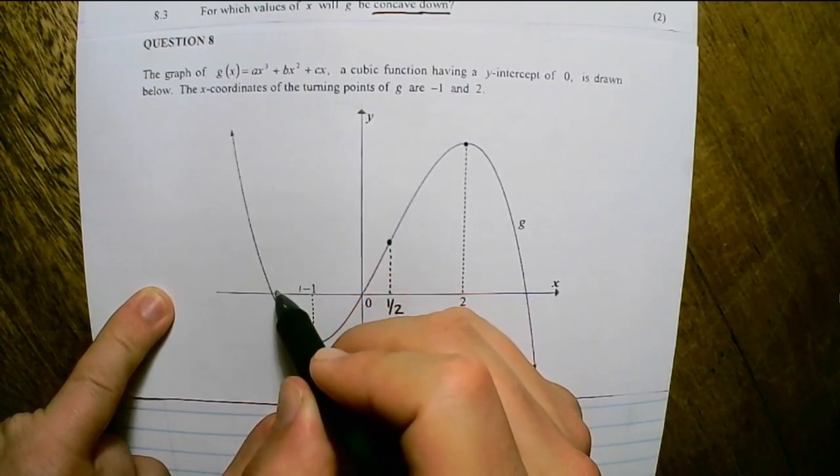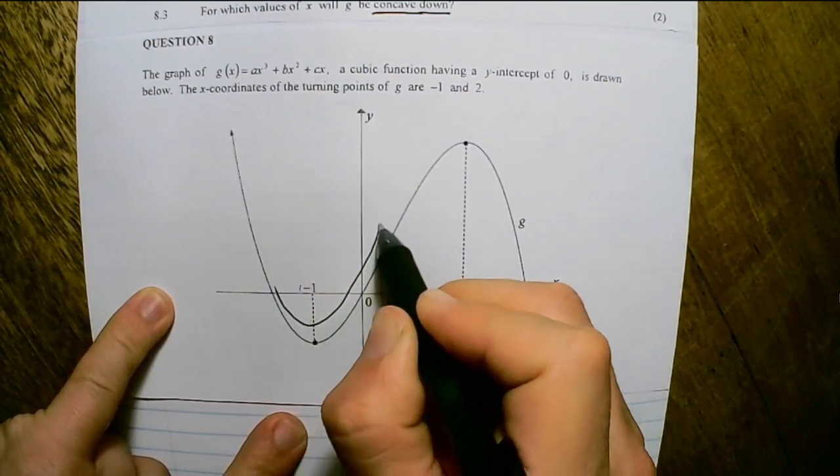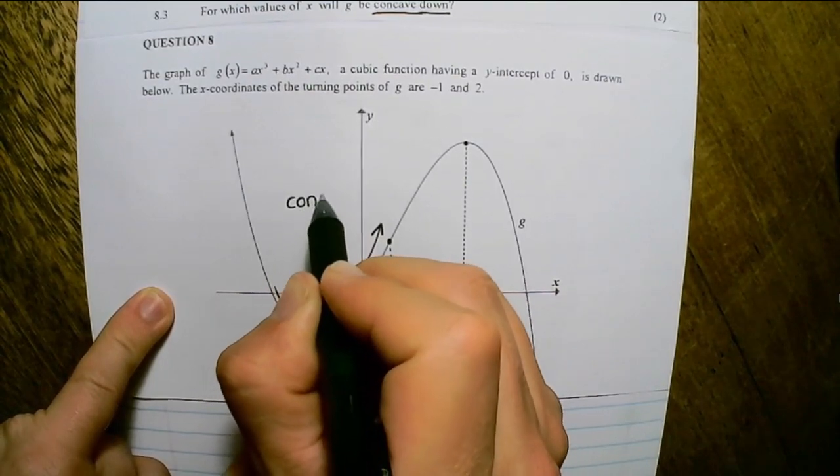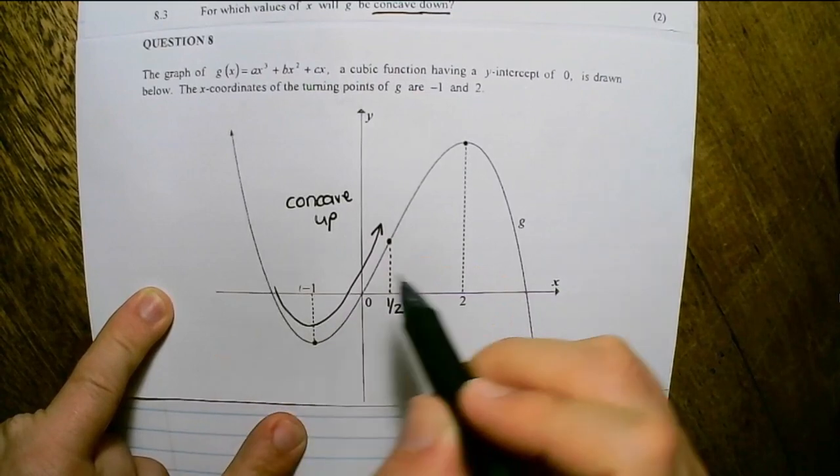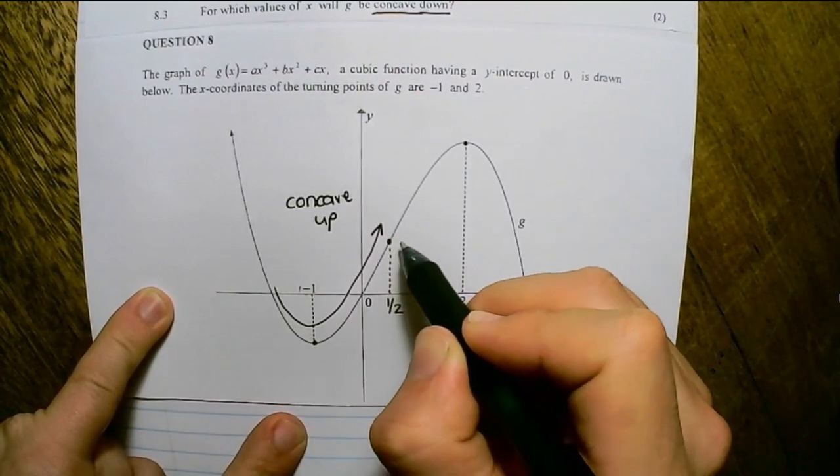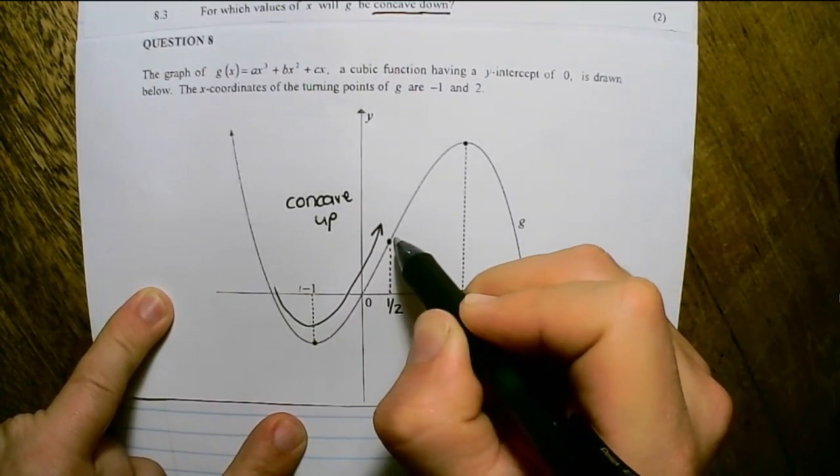I see that it'll shape upwards. So this is concave up. And after the point of inflection, from left to right, if I follow it,